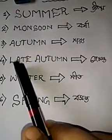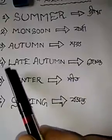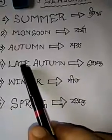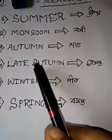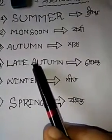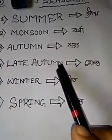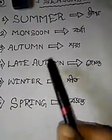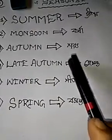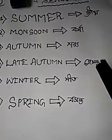Next one is late autumn — L-A-T-E, A-U-T-U-M-N — same spelling as autumn. In Bengali, late autumn is Hemanto.